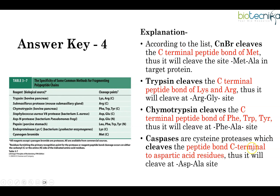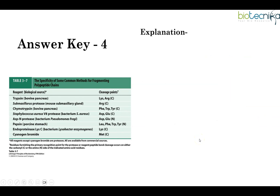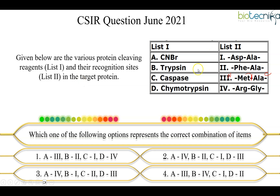Caspases are actually cysteine proteases — they cleave the peptide bond C-terminal to aspartic acid residues, so they cleave at the aspartate-alanine site. With that, matching becomes easy: CNBr is for methionine, trypsin is for lysine and arginine (B4), chymotrypsin is for aromatic amino acids like phenylalanine, and caspase is near aspartate. So the correct answer is option 4.